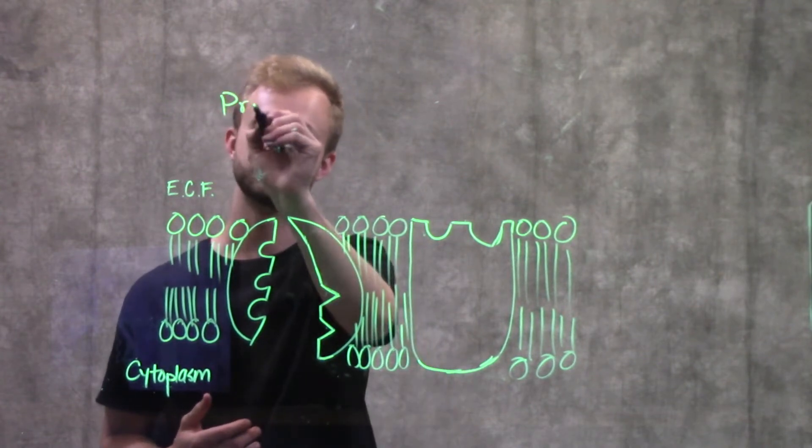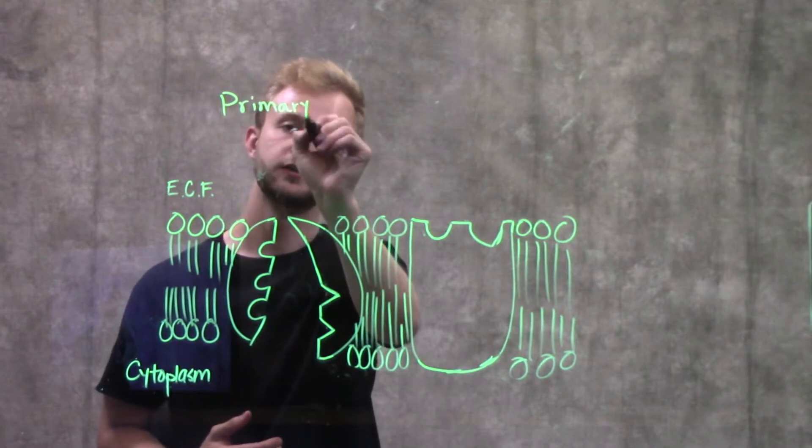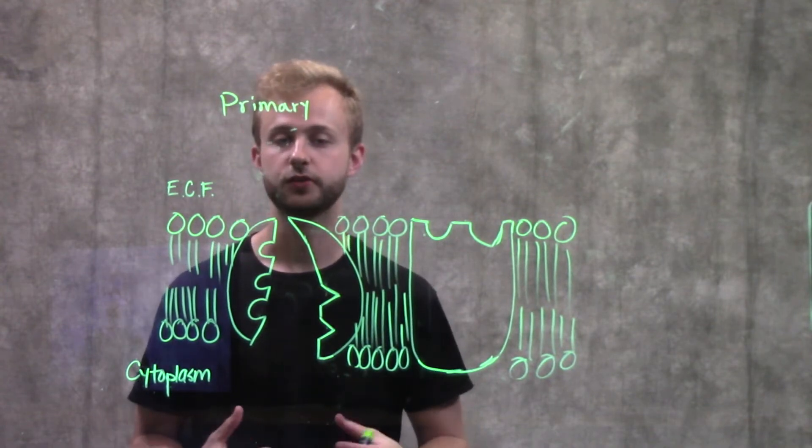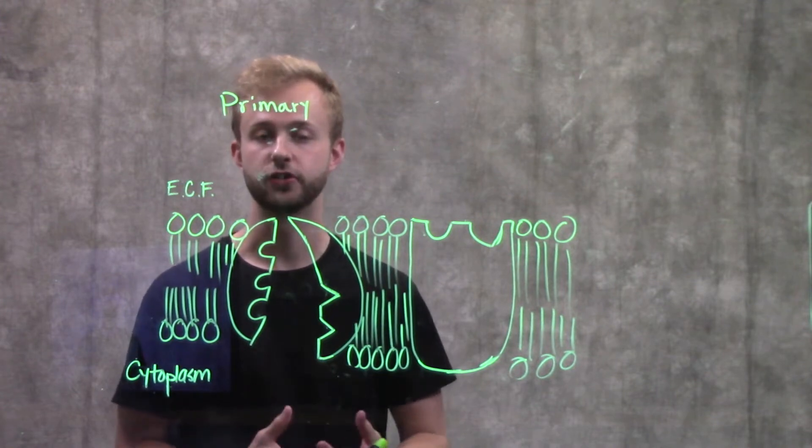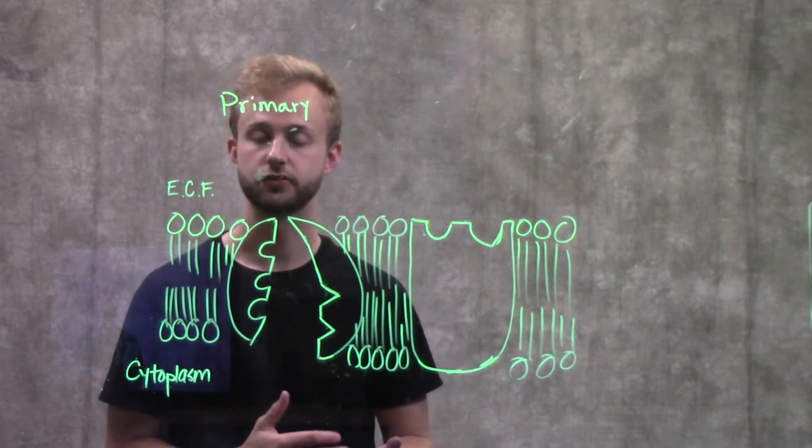So the first is primary active transport. In primary active transport, the transport protein is going to bind to ATP directly, hydrolyze it, and then use that energy to transport things against their concentration gradients.